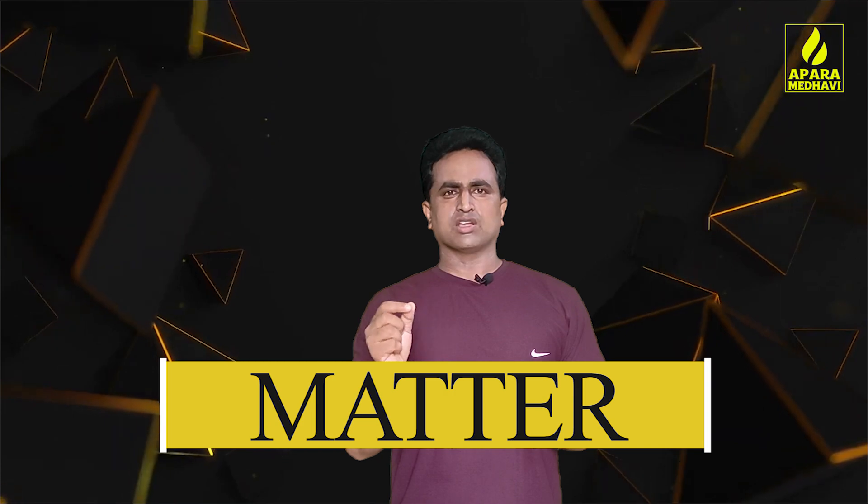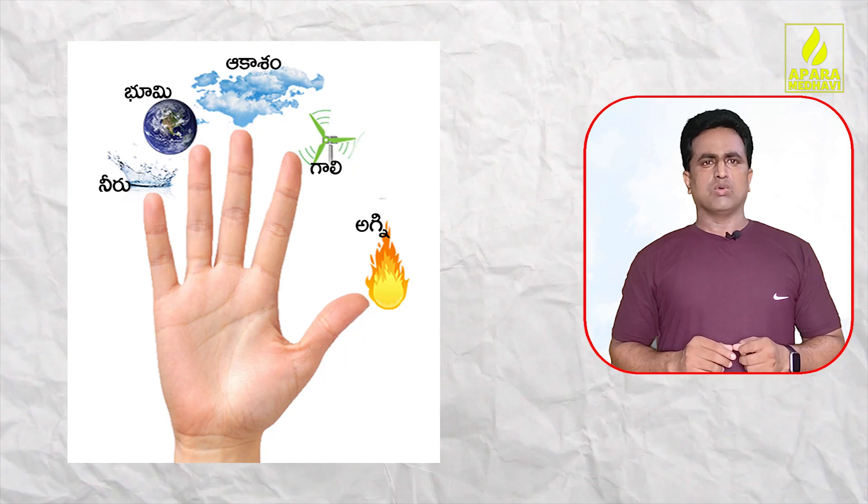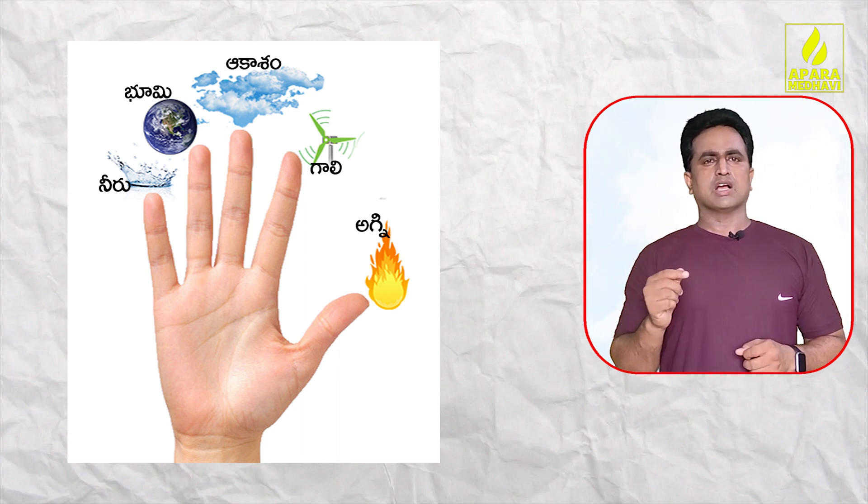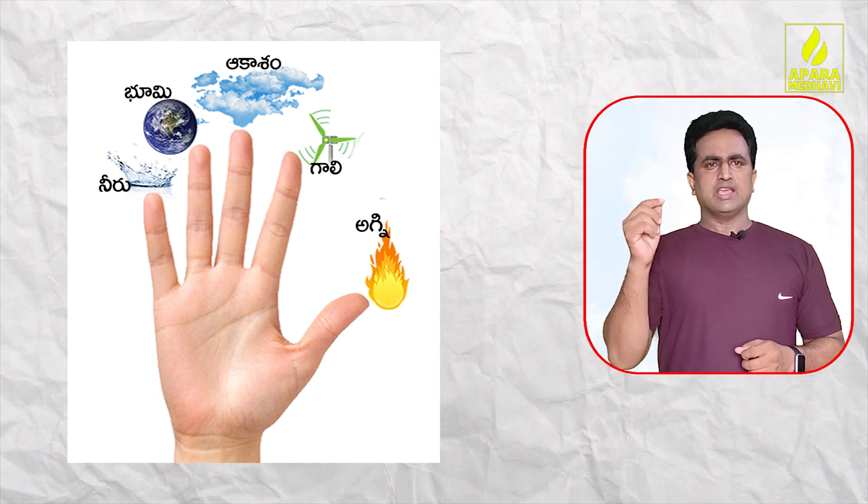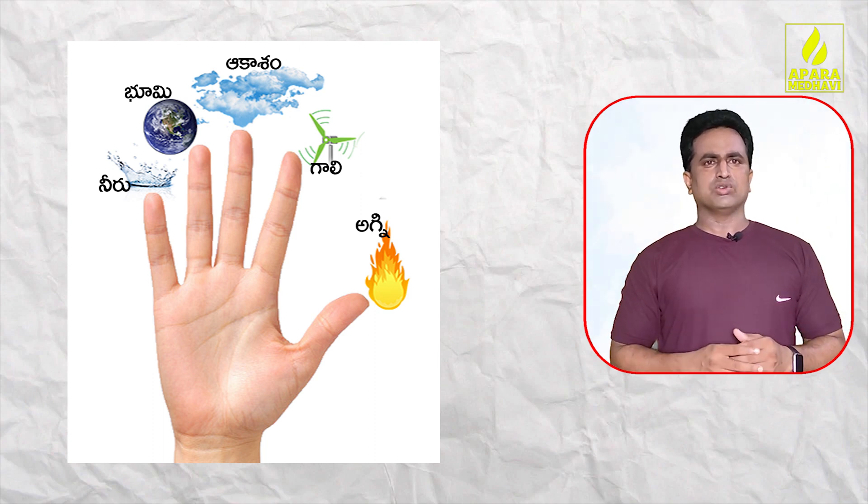Our Indian philosophers classified matter into five elements called Pancha Bhutas: Gali (Air), Nieru (Water), Boomy (Earth), Akasham (Sky), and Agni (Fire).